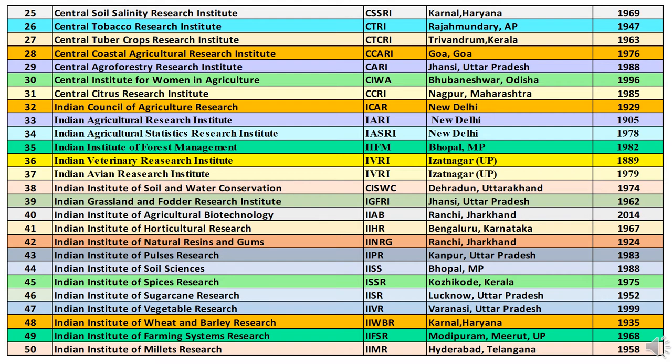Thirty-fourth is IASRI — Indian Agricultural Statistics Research Institute — headquartered at New Delhi, established in 1978. Thirty-fifth is IIFM — Indian Institute of Forest Management — headquartered at Bhopal, Madhya Pradesh, established in 1982. Thirty-sixth is IVRI — Indian Veterinary Research Institute — headquartered at Izatnagar, Uttar Pradesh, established in 1889.